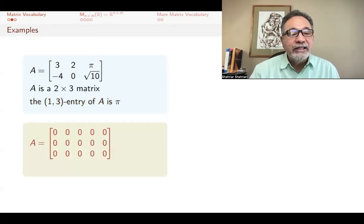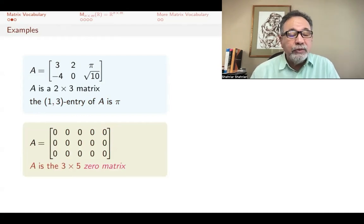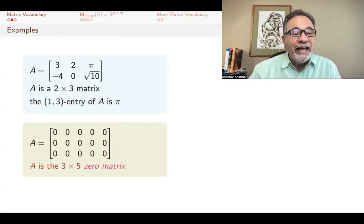Here's another matrix. This is a 3 by 5 matrix, and it's a matrix that has only zeros in it. For that reason, we call it the zero matrix, the 3 by 5 zero matrix.